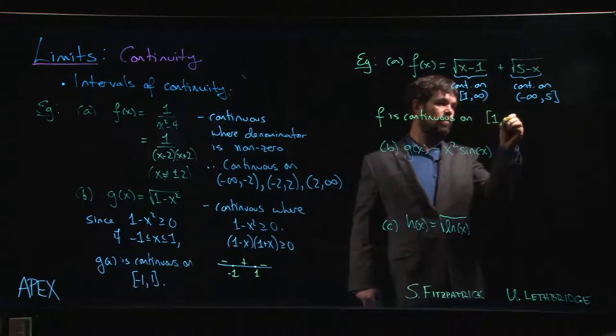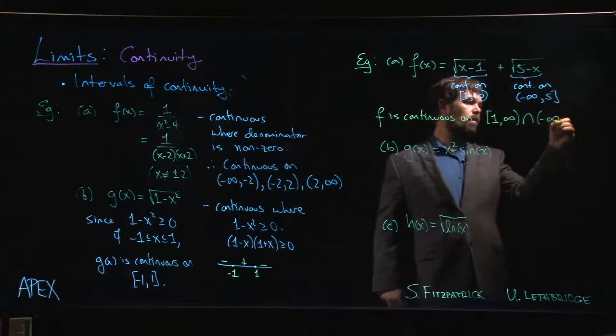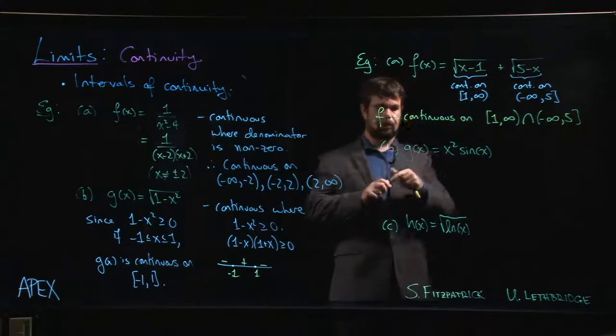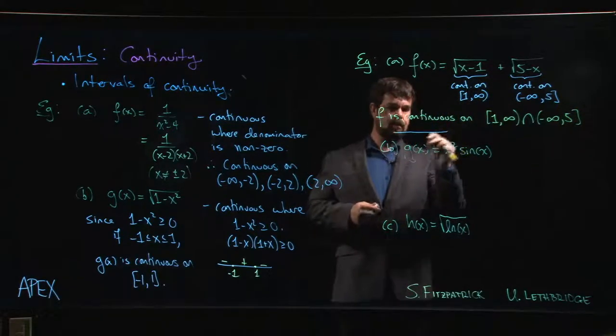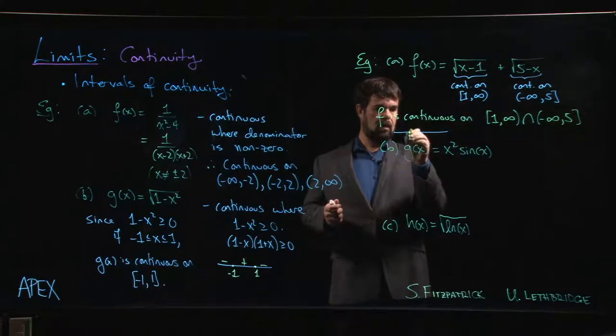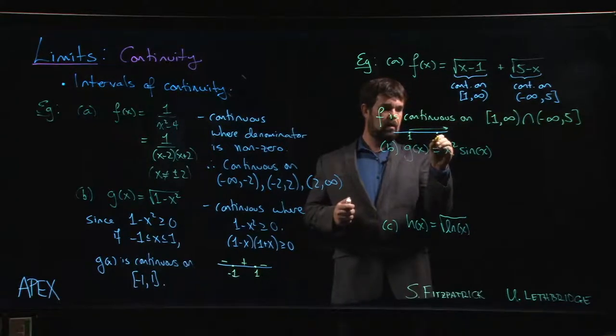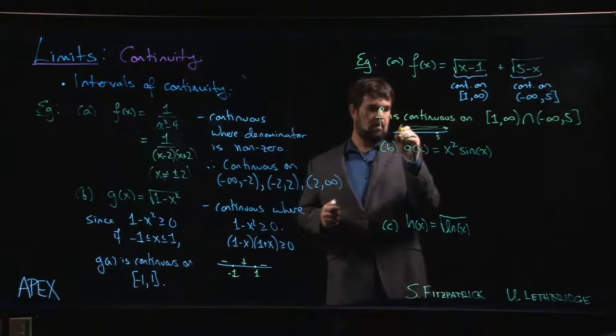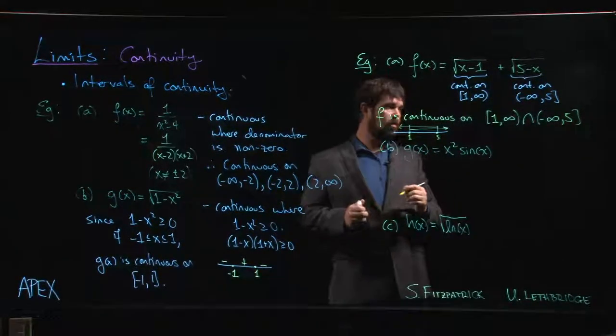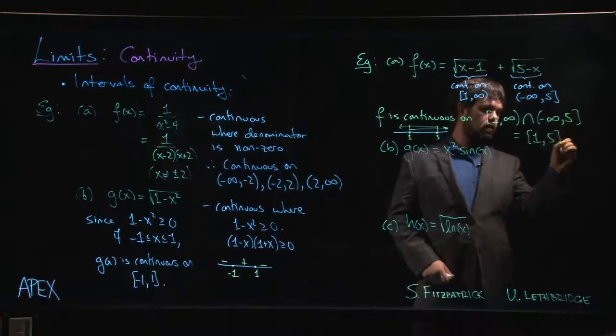So if I take the interval from 1 to infinity and I intersect with the interval from minus infinity to 5, if you want to think in terms of a number line, we have on the one hand everything from 1 going that way. On the other hand we have everything from 5 going that way. We want the bit that's in common, which is everything from 1 to 5.